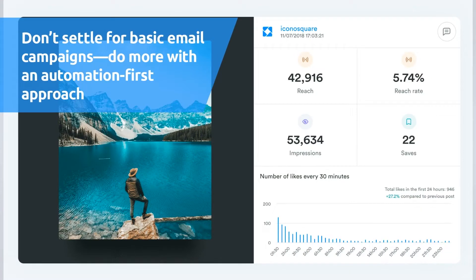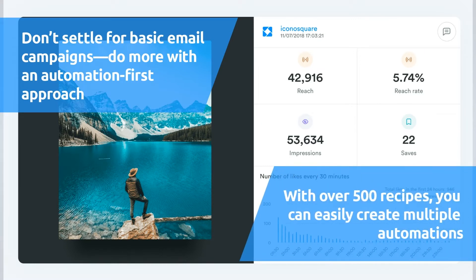Don't settle for basic email campaigns — do more with an automation-first approach. For small businesses, Constant Contact is a good option. But for those who are looking to take a more effective approach, ActiveCampaign offers a variety of segmentation and automation features that will help you manage your marketing efforts. With over 500 recipes, you can easily create multiple automations such as list segmentation, cart reminder emails, and contact scoring.